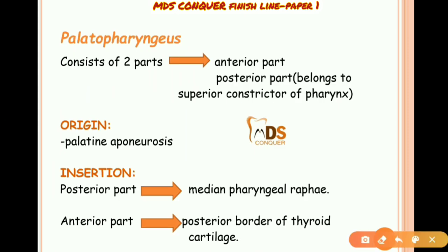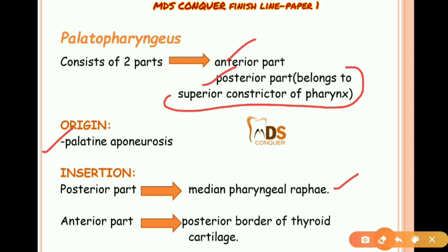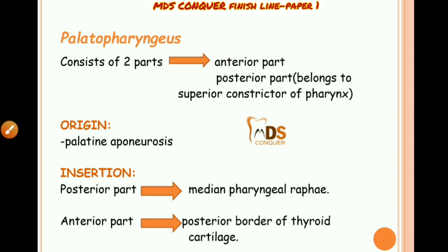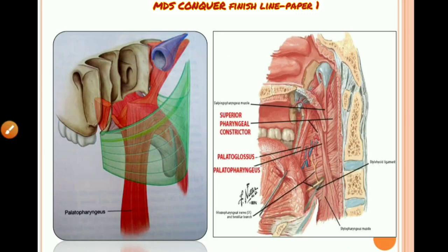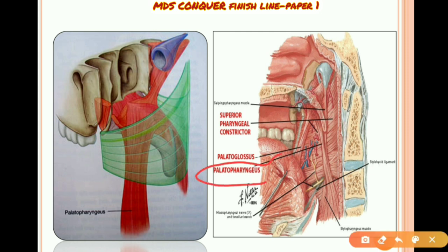Palatopharyngeus consists of an anterior part and a posterior part; the posterior part belongs to the superior constrictor muscle of the pharynx. Its origin is from the palatine aponeurosis. The posterior part inserts into the pharyngeal raphé and the anterior part inserts into the posterior border of the thyroid cartilage.